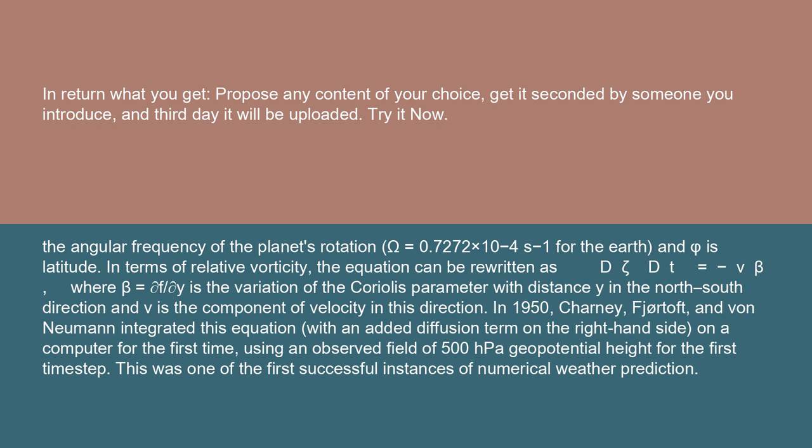In 1950, Charney, Fjortoft, and von Neumann integrated this equation — with an added diffusion term on the right-hand side — on a computer for the first time, using an observed field of 500 hPa geopotential height for the first time step. This was one of the first successful instances of numerical weather prediction.